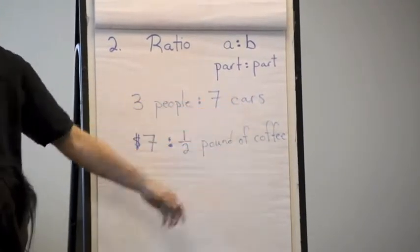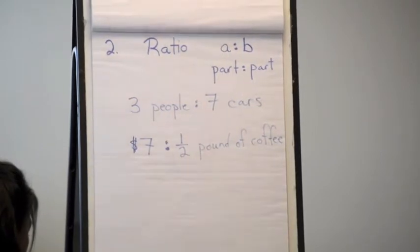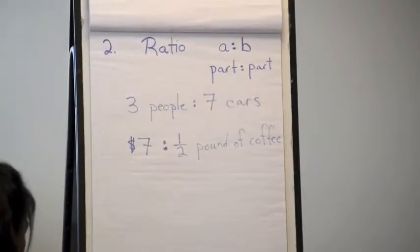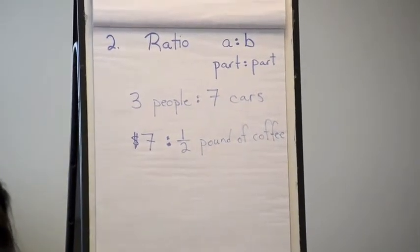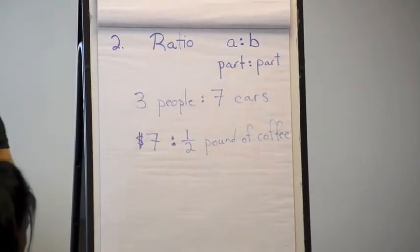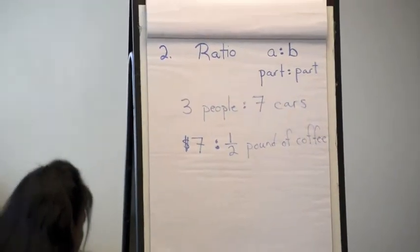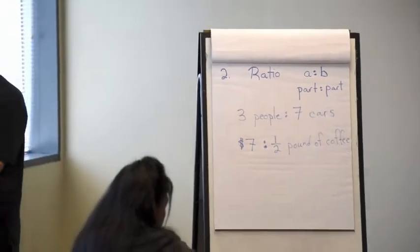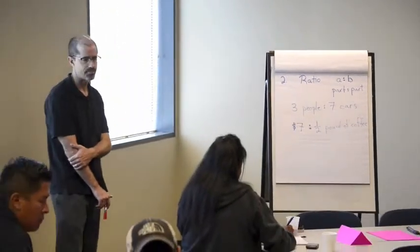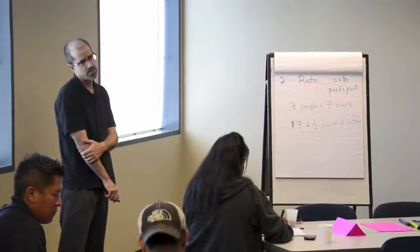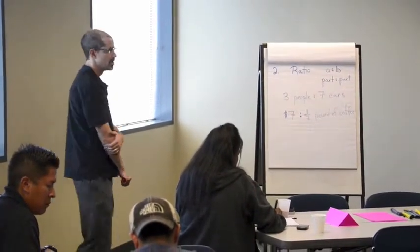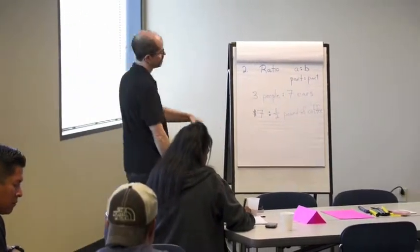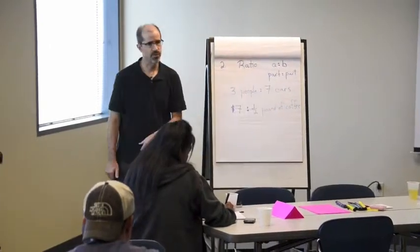Three people to seven cars — that sounds kind of funny, but that's a type of ratio. We could take a survey and figure out how many people there are in a room and how many cars are outside. Maybe some people took buses or mass transit or whatever.